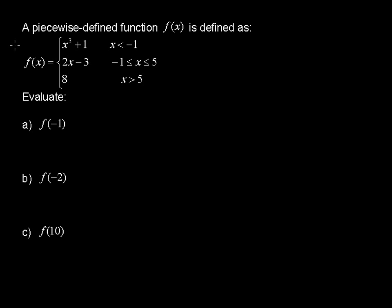A piecewise defined function f(x) is defined as: x cubed plus 1 when x is less than negative 1; 2x minus 3 when x is between negative 1 and positive 5, including negative 1 and positive 5; and the function equals 8 when x is greater than 5.